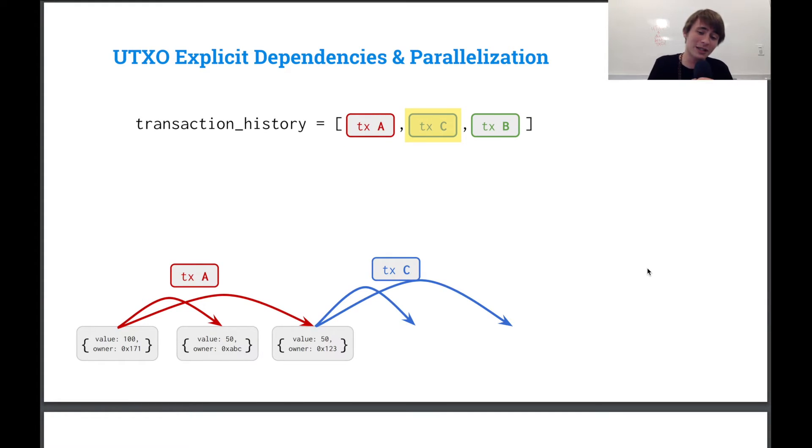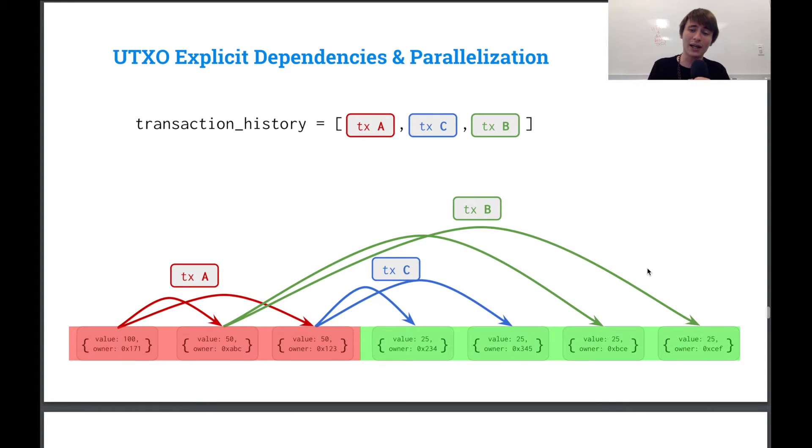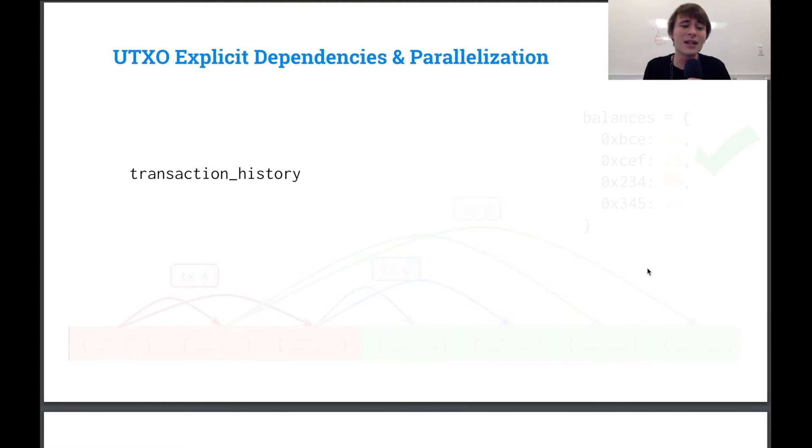So first transaction A spends the first UTXO. Then transaction C spends that UTXO and transaction B that UTXO. So if we look, we'll actually find that the state object is the same as before. We get the same balances at the end. So what does that really mean? That kind of means that these two transaction histories are pretty much equivalent in terms of the state that they output. So it doesn't matter if you run transaction B first or you run transaction C first.